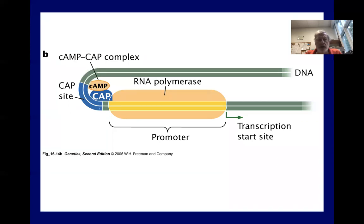So a closeup then of the control region shows the RNA polymerase bound promoter. And just to the left of that is the CAP site where the CAP-cAMP complex binds to increase the affinity for RNA polymerase to transcribe the operon.